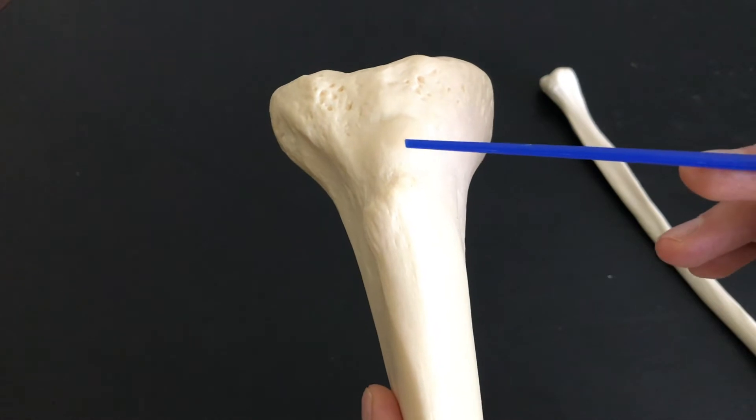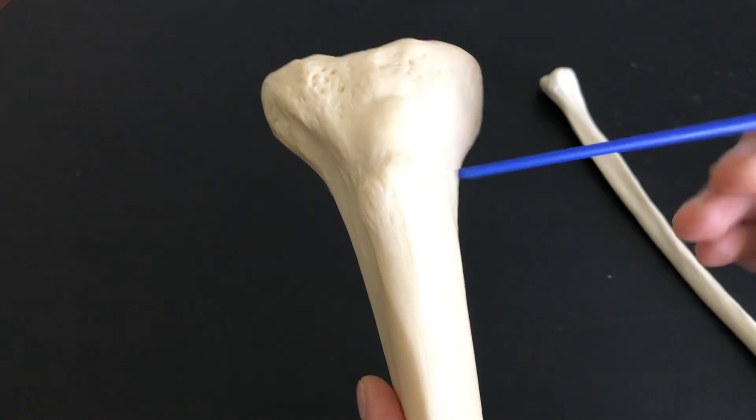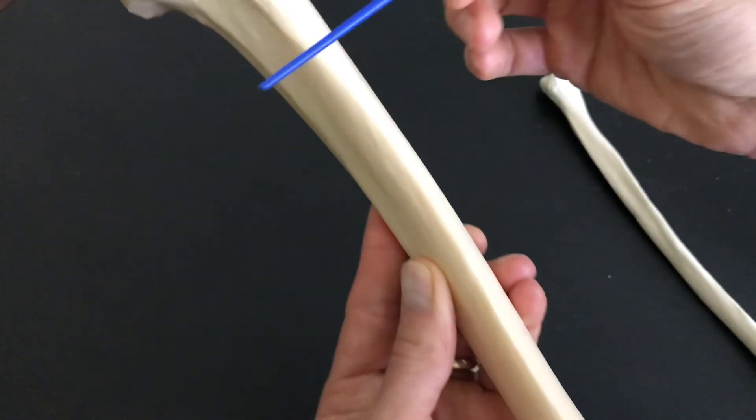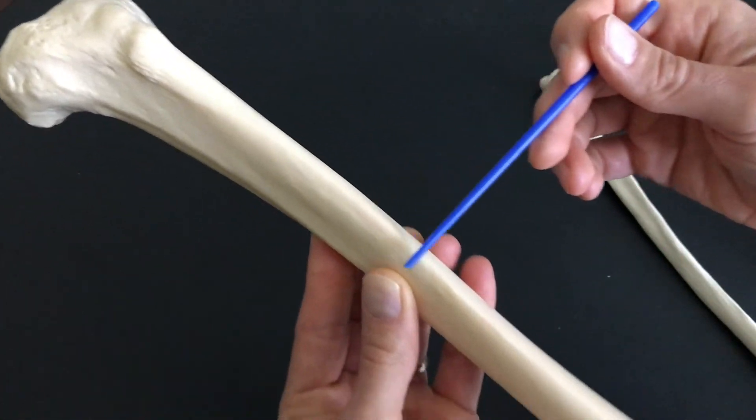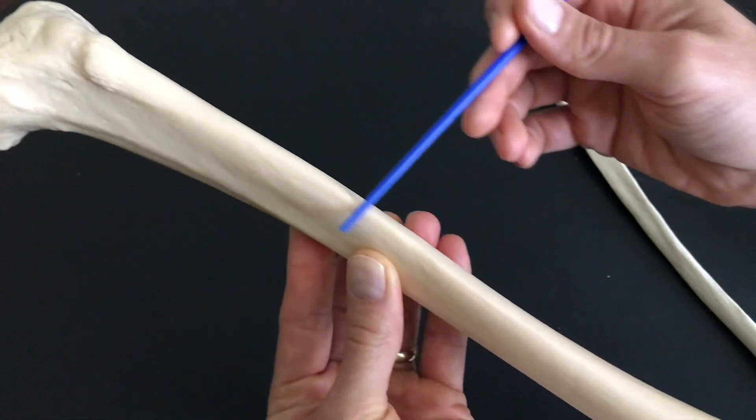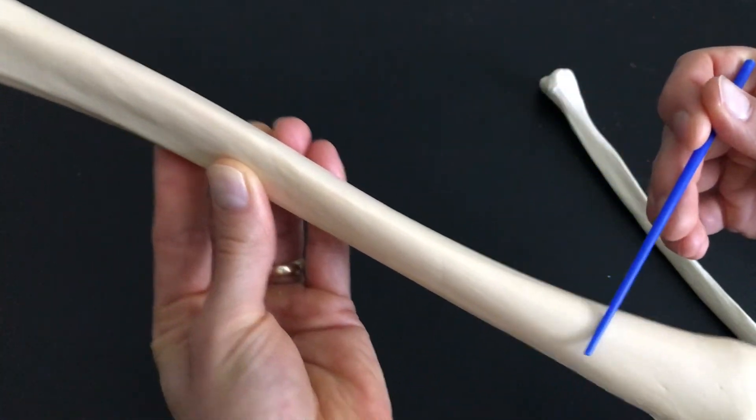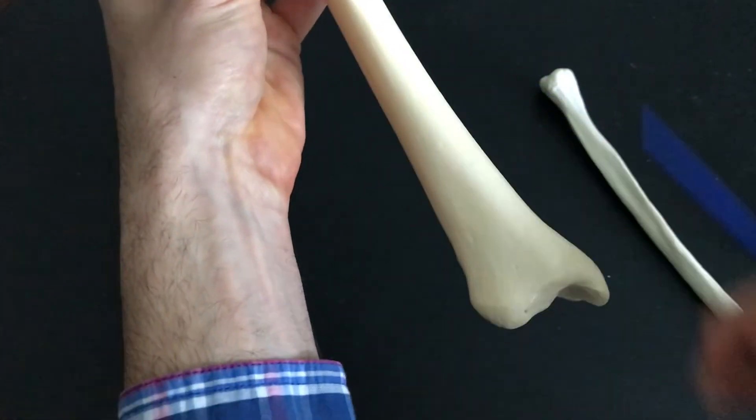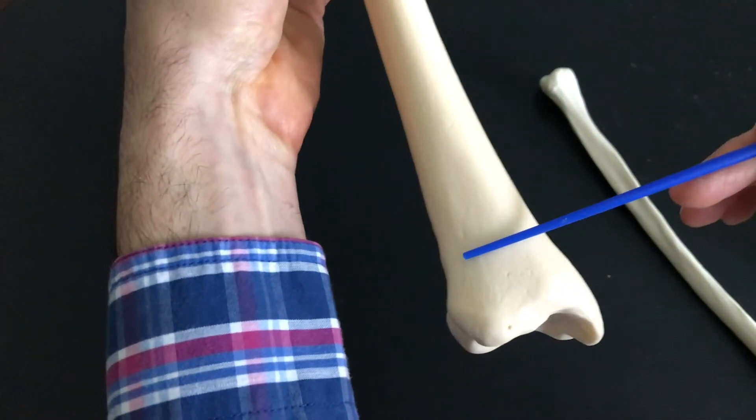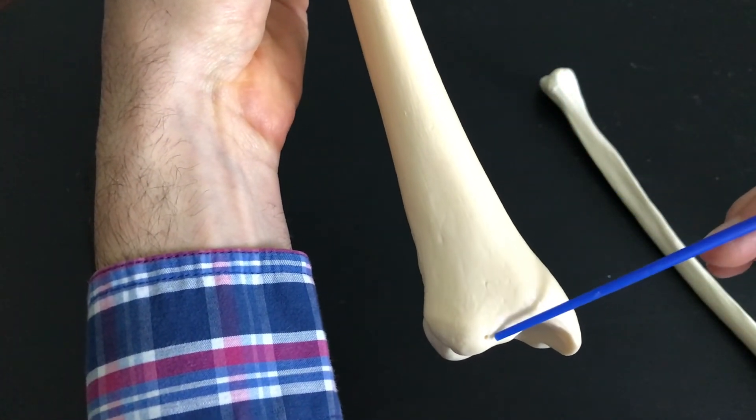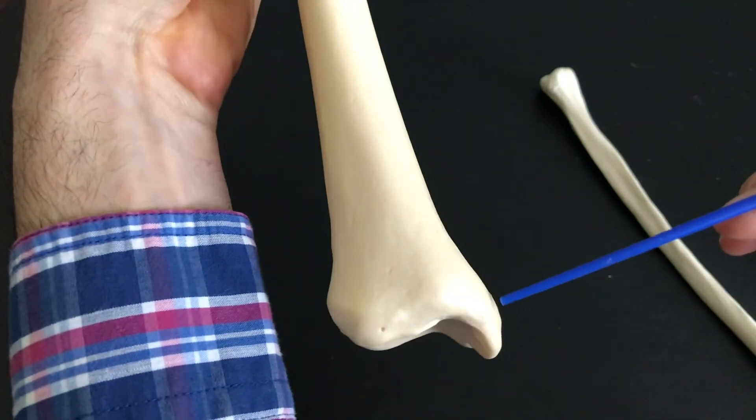From there we go all the way down the diaphysis. You'll feel the sharp anterior crest. Even if you palpate it on yourself, that sharp anterior crest comes all the way down and it brings us to the lower portion, the inferior portion, and this is what we call the medial malleolus.